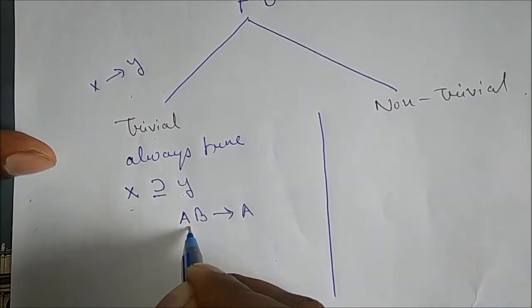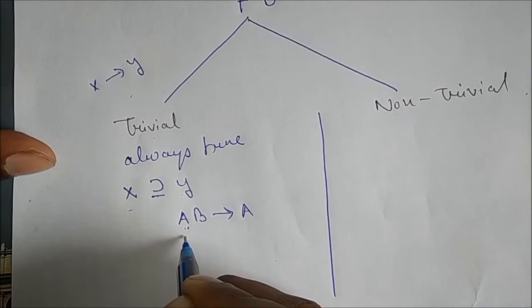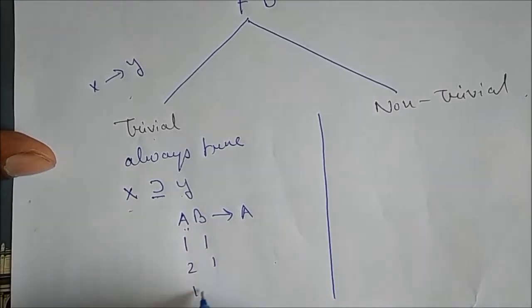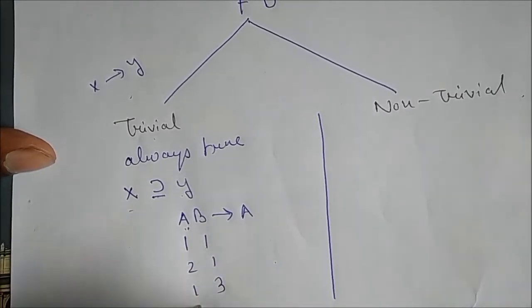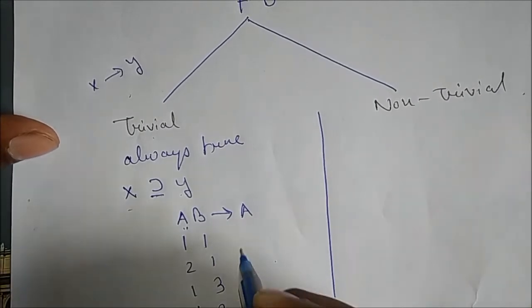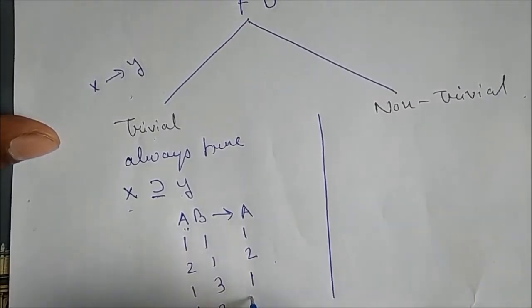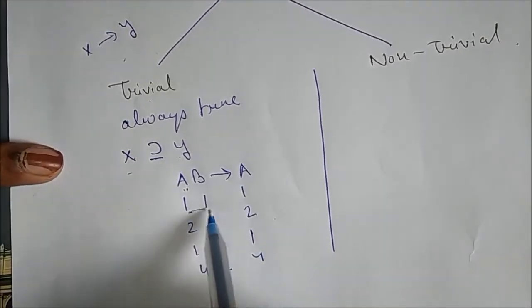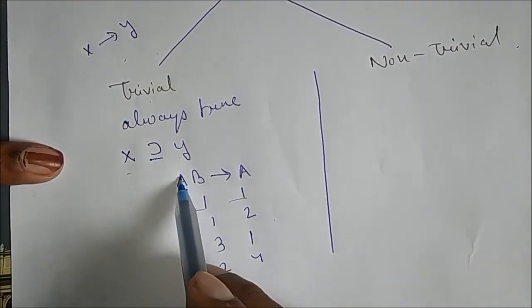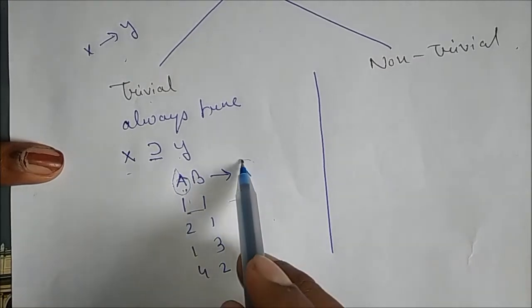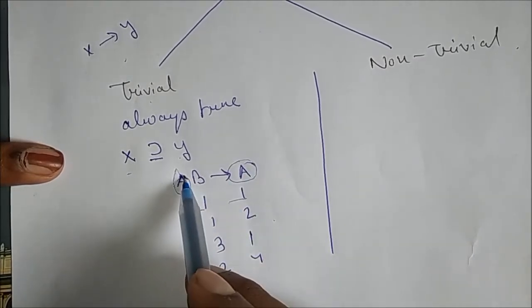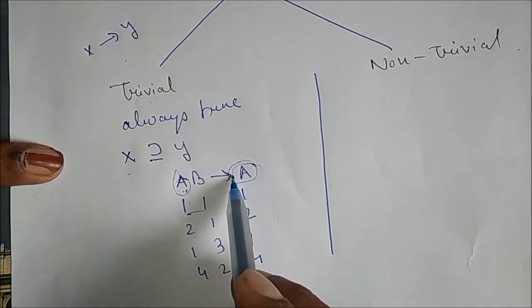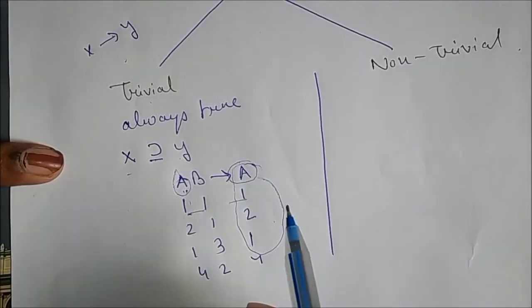See, it is always true. Because what value A will contain — for example values like 1,1 / 1,2 / 1,1 / 3,1 / 3,1 / 3,4 / 2,1 / 2,1 / 2,4 — it will always be true. Because A and A: here is A and here also is A. What value A is containing in the column is also the value of A here. So it will always be true. This is the meaning of Trivial.